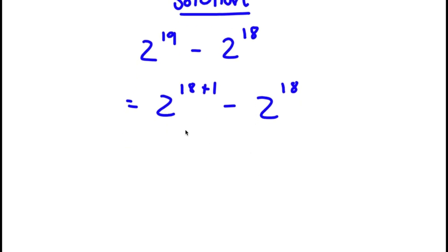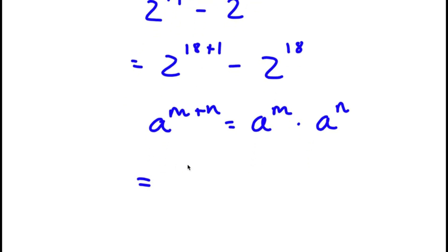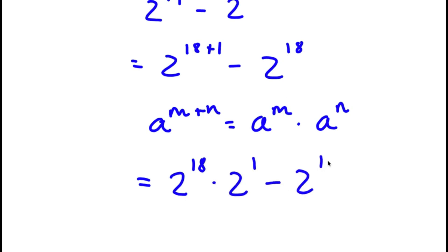Now, if I have something in the form a to the power of m plus n, this is equal to a to the power of m times a to the power of n. So 2 to the power of 18 plus 1 equals 2 to the power of 18 times 2 to the power of 1, and I have minus 2 to the power of 18 at the end.